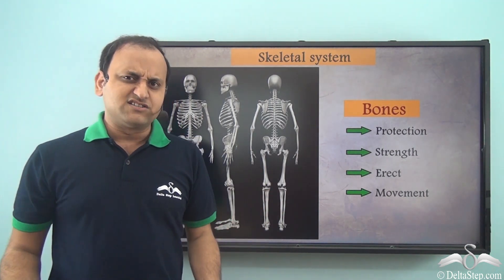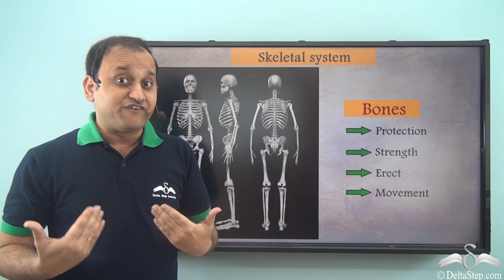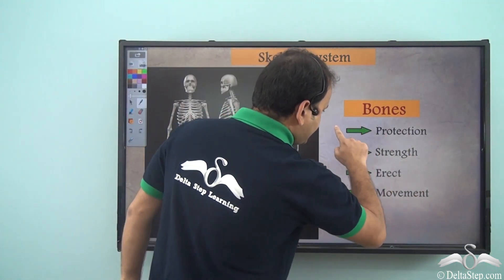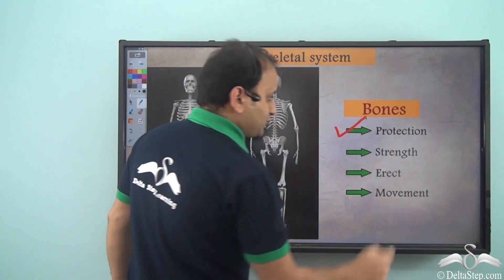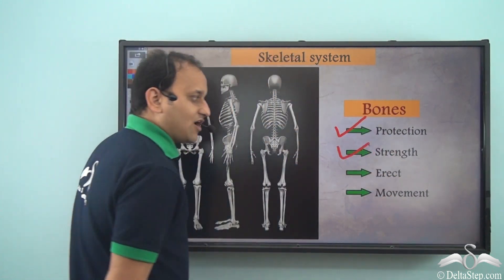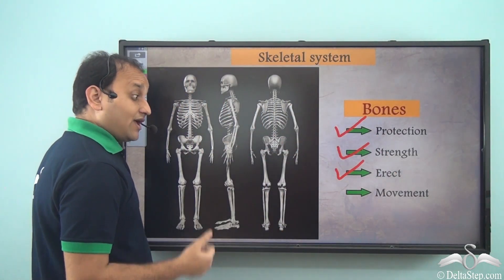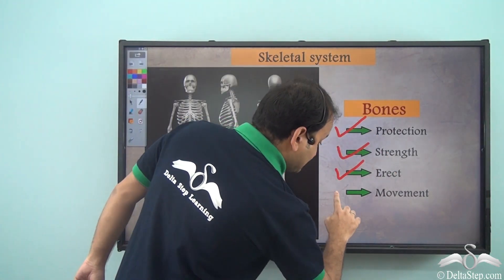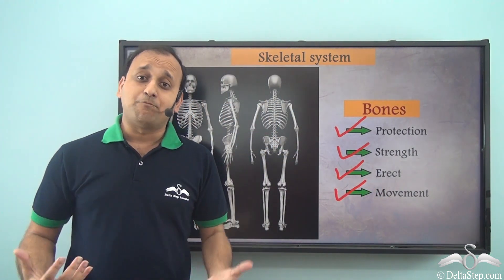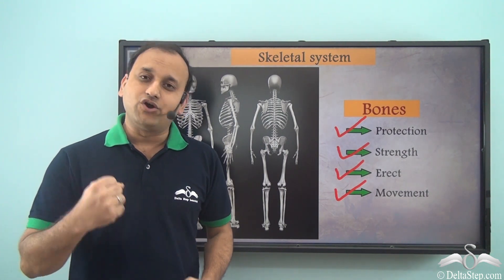So you see, the skeletal system is a very important part of our body with very important functions. What are the functions? It gives protection to our body, it gives strength to our body, it helps us stay erect, and it helps us in movement. So all these bones are a very important part of our body and we should take very good care of them.